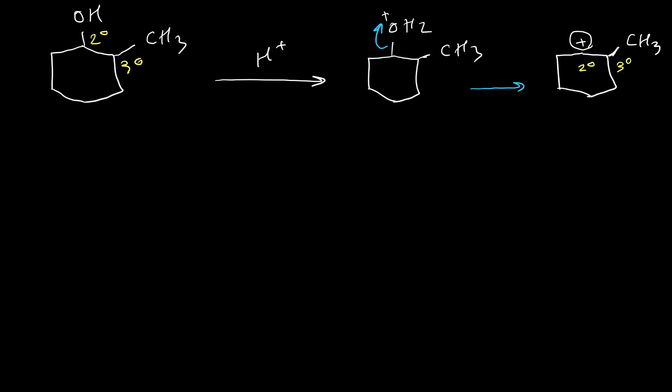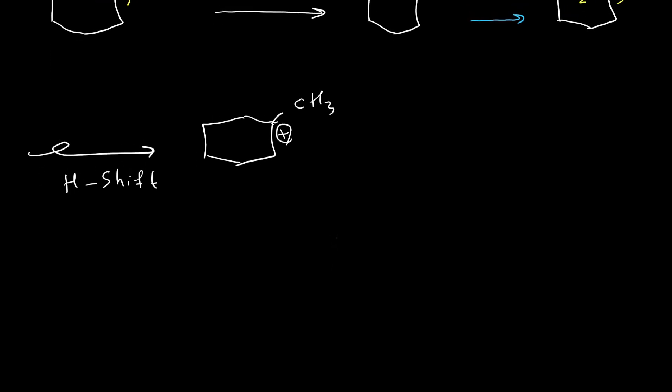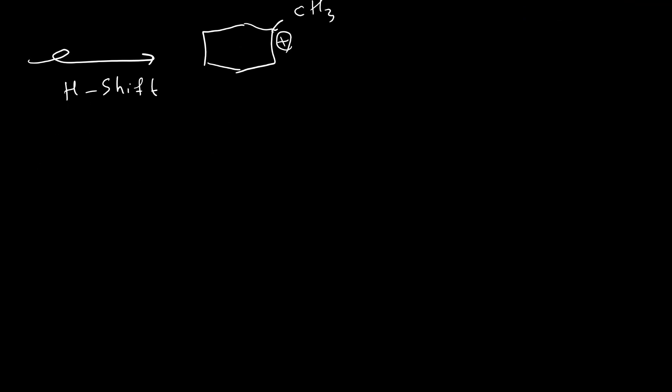If you don't remember the rearrangement of carbocations, there is a link for another video in the description. You can watch it to review carbocation formation and rearrangements. We can have a rearrangement to the tertiary carbocation by hydride shift. So right now, there are two different types of carbocations. Each of these carbocations can produce different alkenes in the next step.